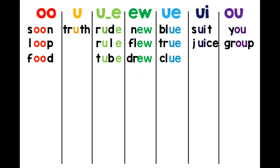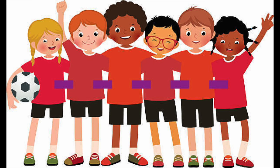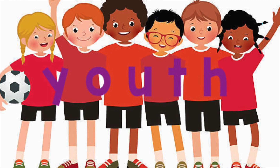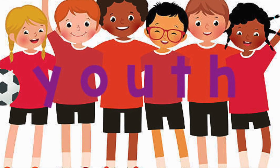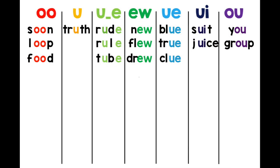Now I will show you a picture. See if you can spell the word that matches the picture. Time for round six. Youth. This is a youth soccer team. Check your spelling. How did you do? Make sure to add all of your new words to your anchor chart and upload a picture in the designated drop box. Thanks for watching.